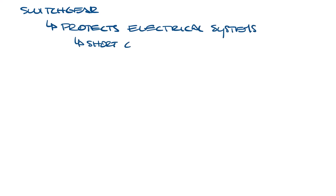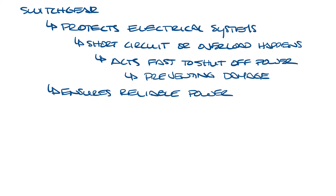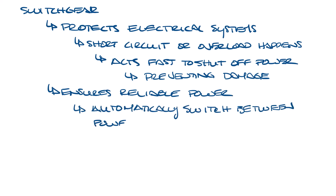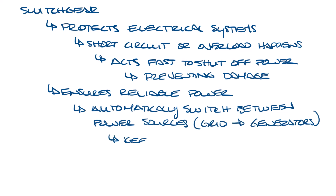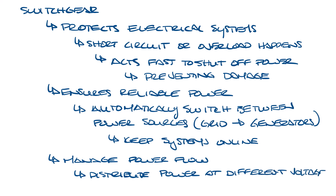Switchgear protects electrical systems. If a short circuit or overload happens, switchgear acts fast to shut off power to the affected area, preventing damage. It also ensures reliable power — in data centers and large buildings, switchgear can automatically switch between power sources, such as from the grid to backup generators, to keep the systems online. And it also manages power flow efficiently.